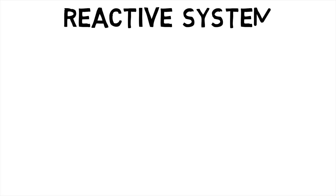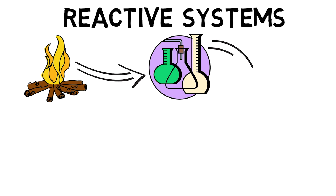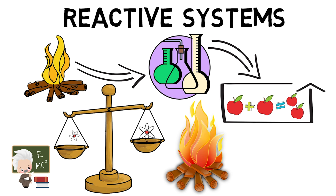Now, reactive systems basically are the thermodynamic systems that may undergo a chemical reaction. With every chemical reaction is associated a chemical equation which is obtained by balancing the atoms of both reactants and products. Reactive systems make use of these equations to study the thermodynamics of these mixtures.